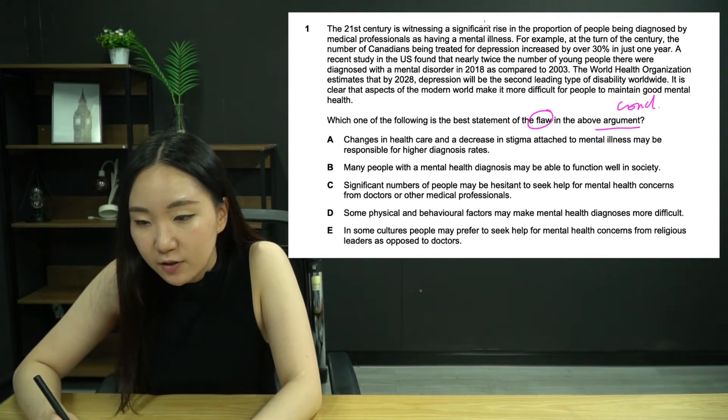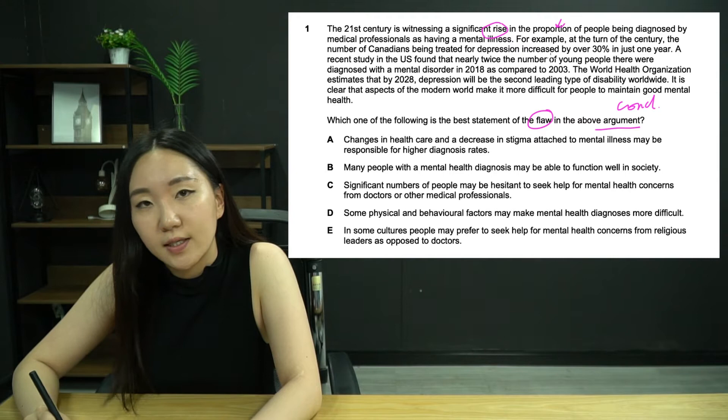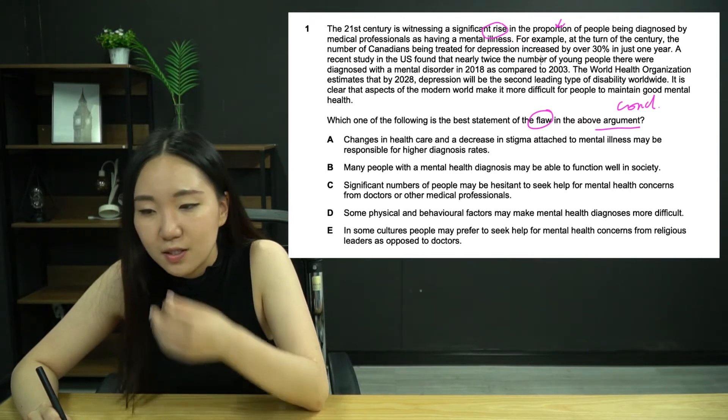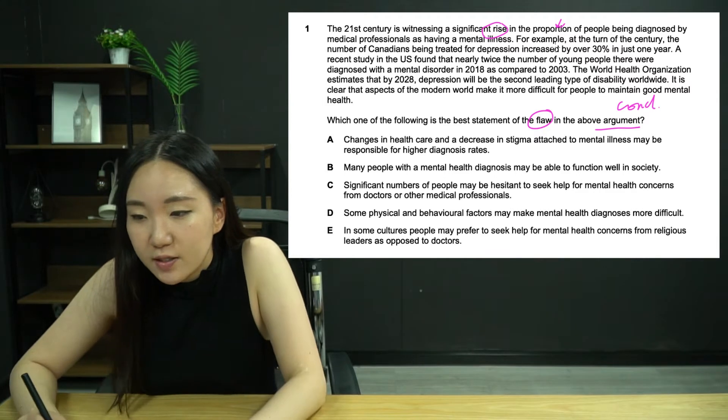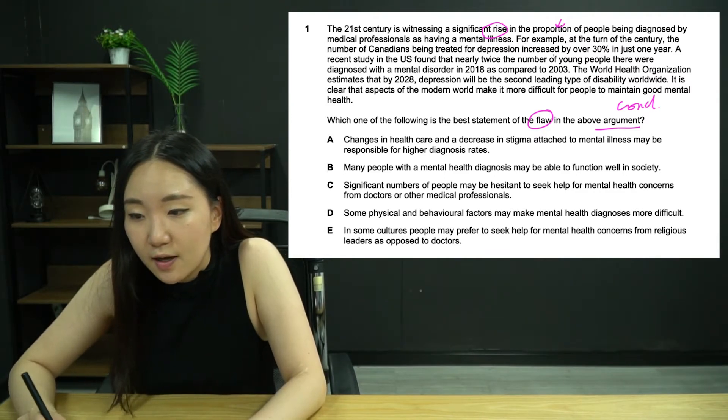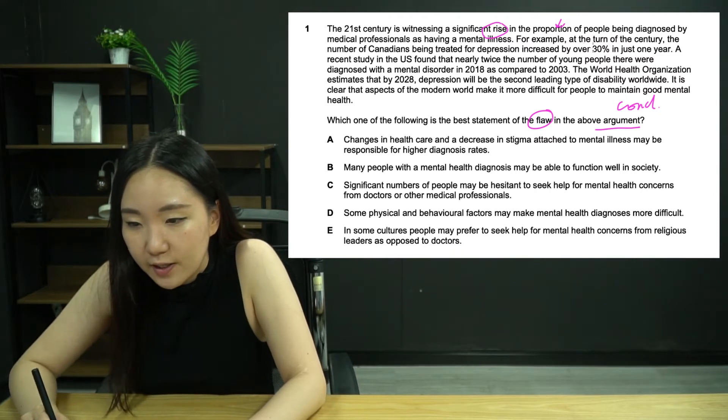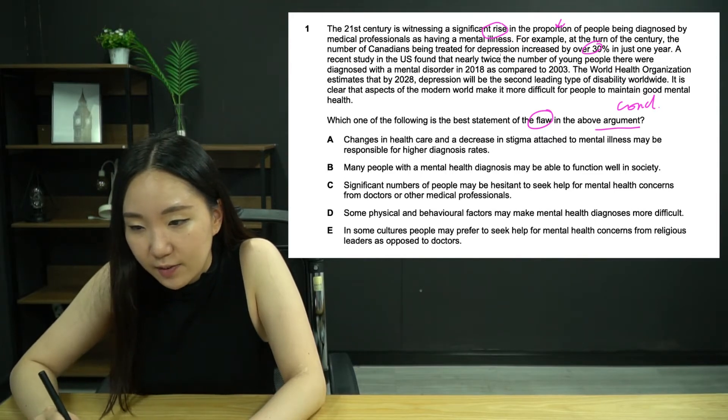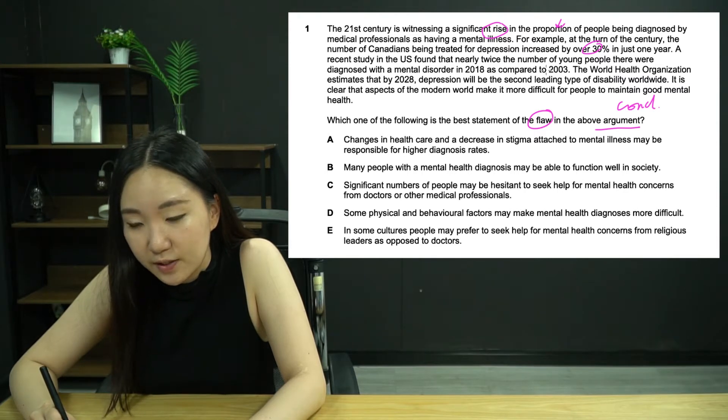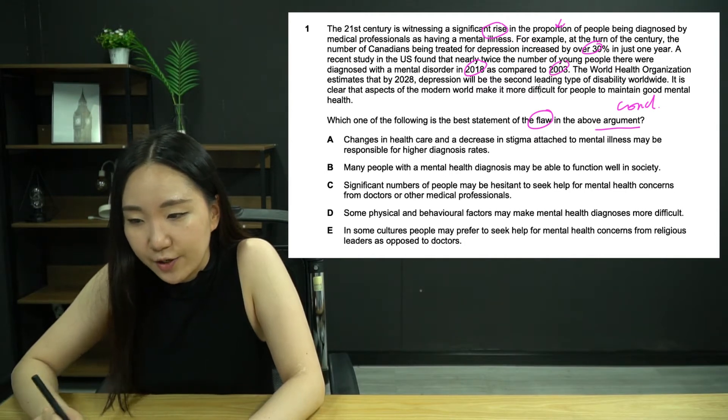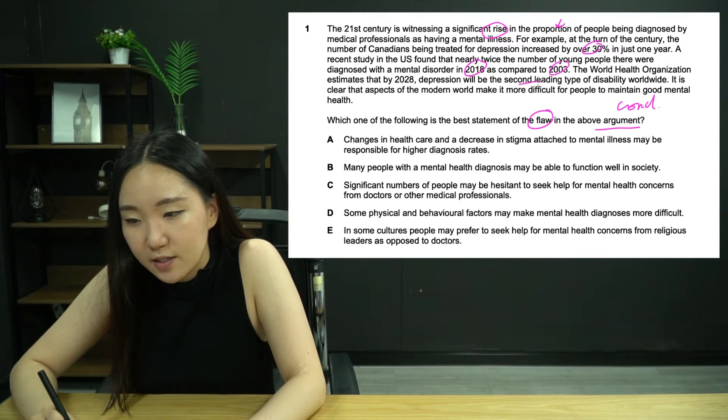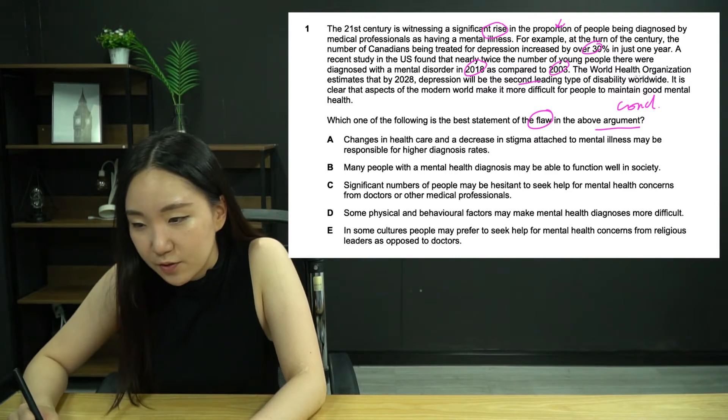So I'm going to simplify as I read along. 21st century, there's been a rise in the proportion of people being diagnosed by medical professionals as having a mental illness. At the turn of the century, the number in Canada was over 30% in one year. In the US, they found that twice the number of young people were diagnosed with a mental disorder in 2018 as compared to 2003.